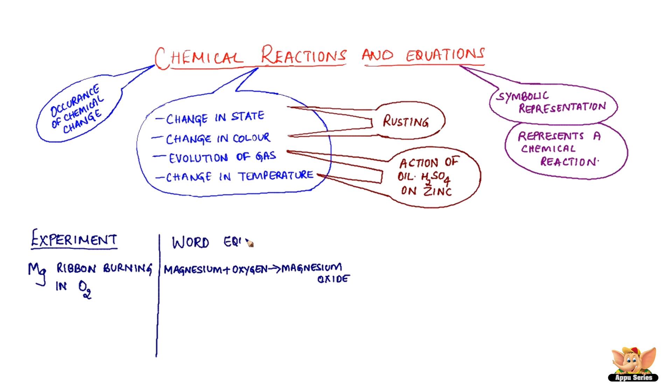This form is called word equation. The substances that undergo chemical change are the reactants and are written on the left-hand side. In this example, magnesium and oxygen are the reactants.